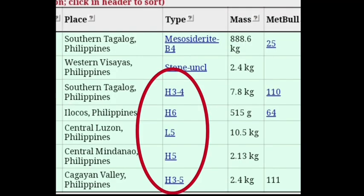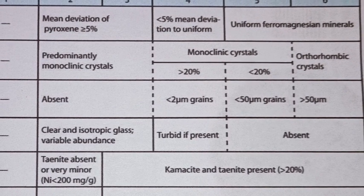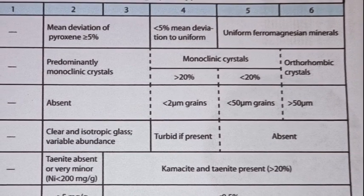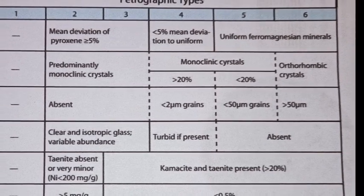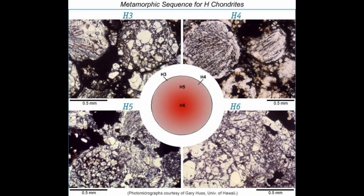Ordinary chondrites are classified by a letter, such as H, L, or LL, followed by a number ranging from 1 to 6. The number reflects the degree of thermal metamorphism the chondrite has experienced, with higher numbers indicating more extensive changes. To better understand the different types of ordinary chondrites, we can examine thin sections of three ordinary chondrites, each with distinct petrographic types, photographed at the same scale.